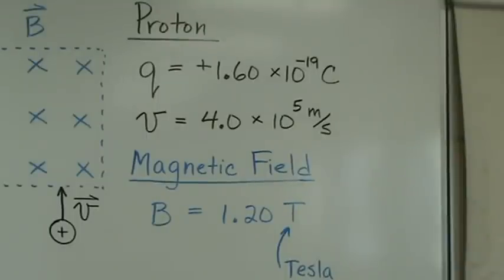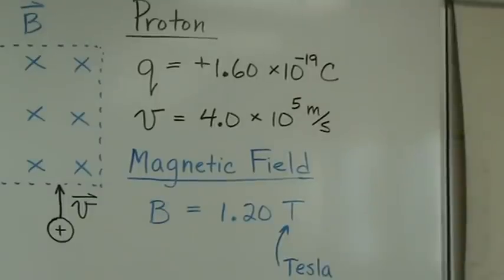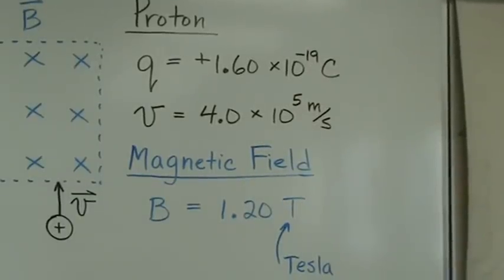So what we have is a proton which, as we know, has a charge of 1.6 times 10 to the minus 19th Coulombs. It's moving at a velocity of 4 times 10 to the fifth meters per second and it's going through a magnetic field that has a value or magnitude of 1.2 Tesla. Tesla is the unit used for magnetic fields.